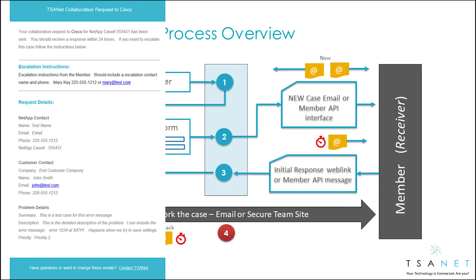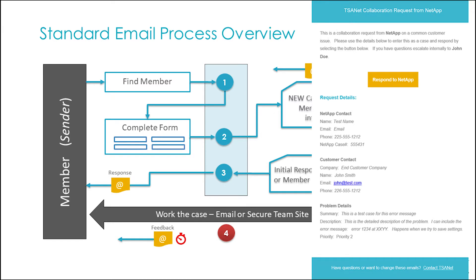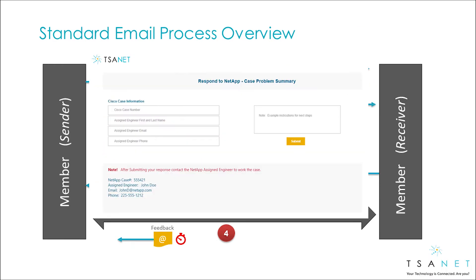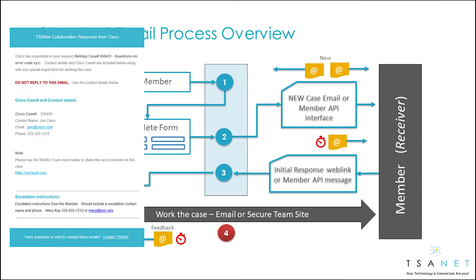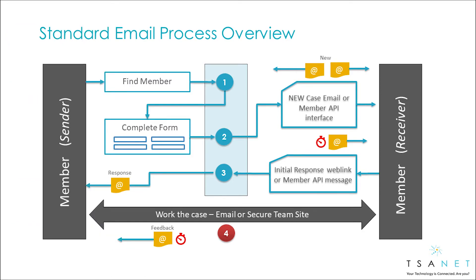Then the email process completes the connection. First, the sender gets an email that includes SLA and escalation instructions to use if needed. The receiver will receive an email with a button to respond to the case. This takes them to a form where they enter their case number, engineer name, and contact details. This information is then sent back to the sender. TSAnet Connect will monitor for initial response SLA and trigger escalation processes as needed.